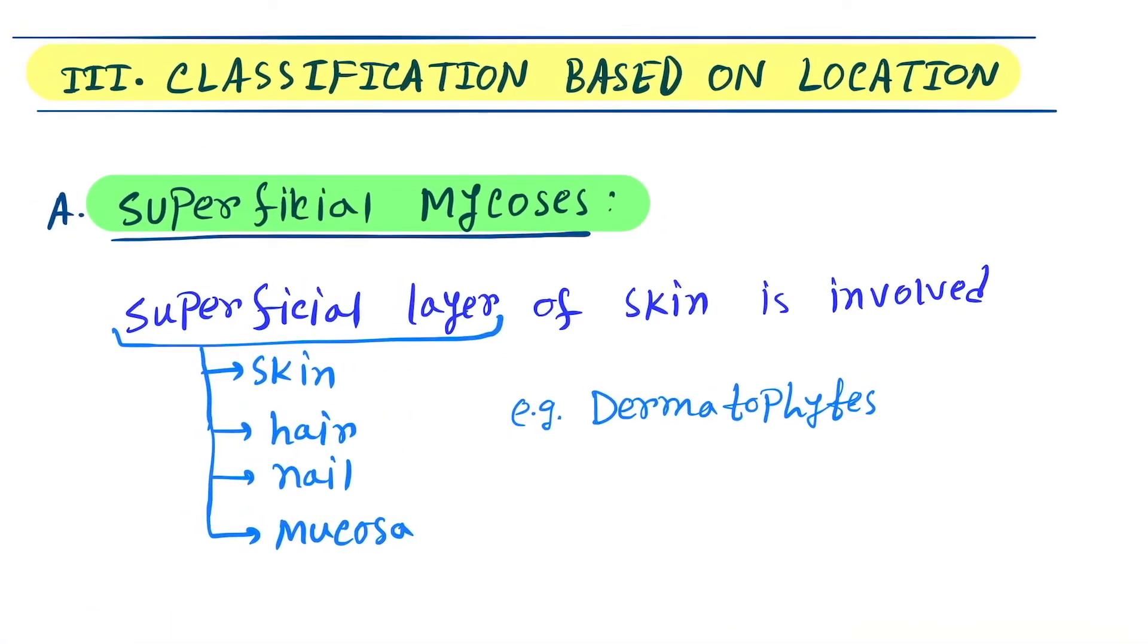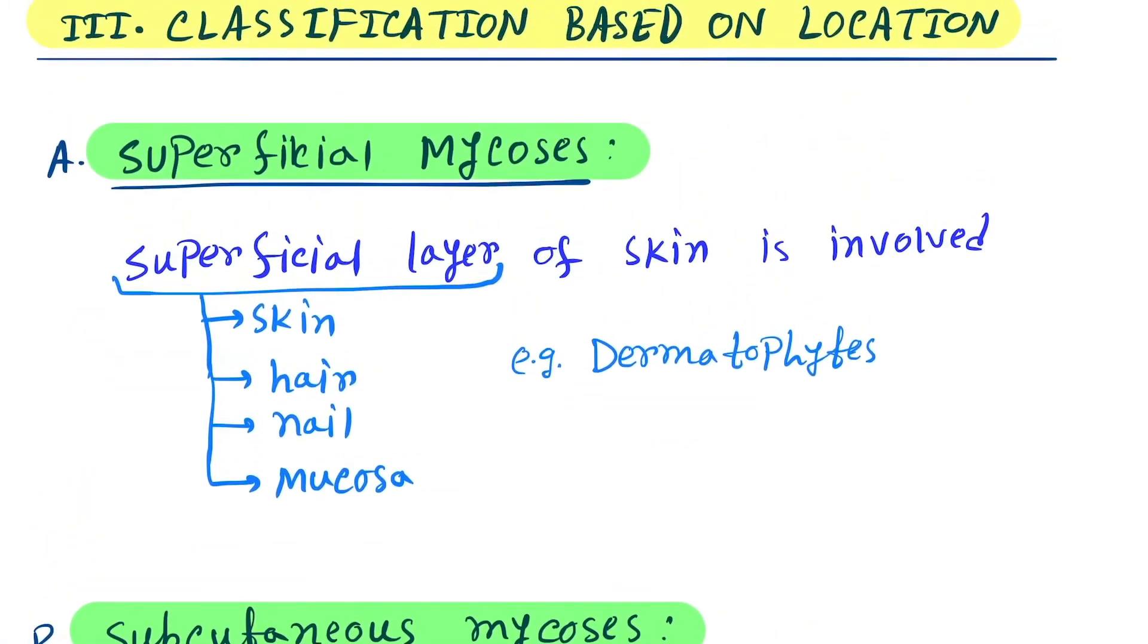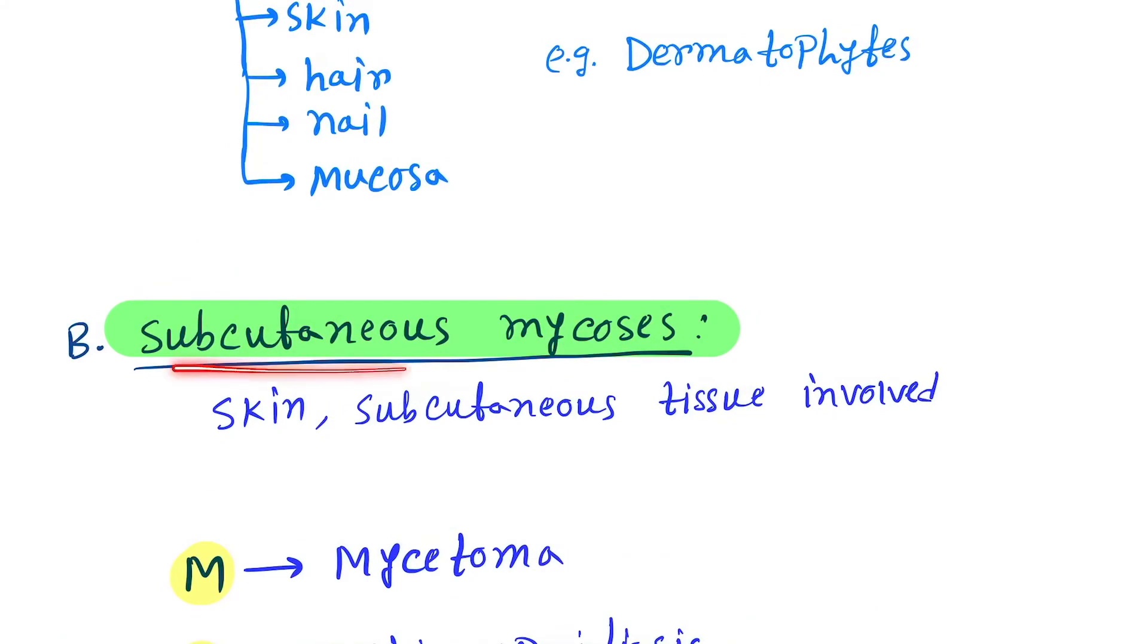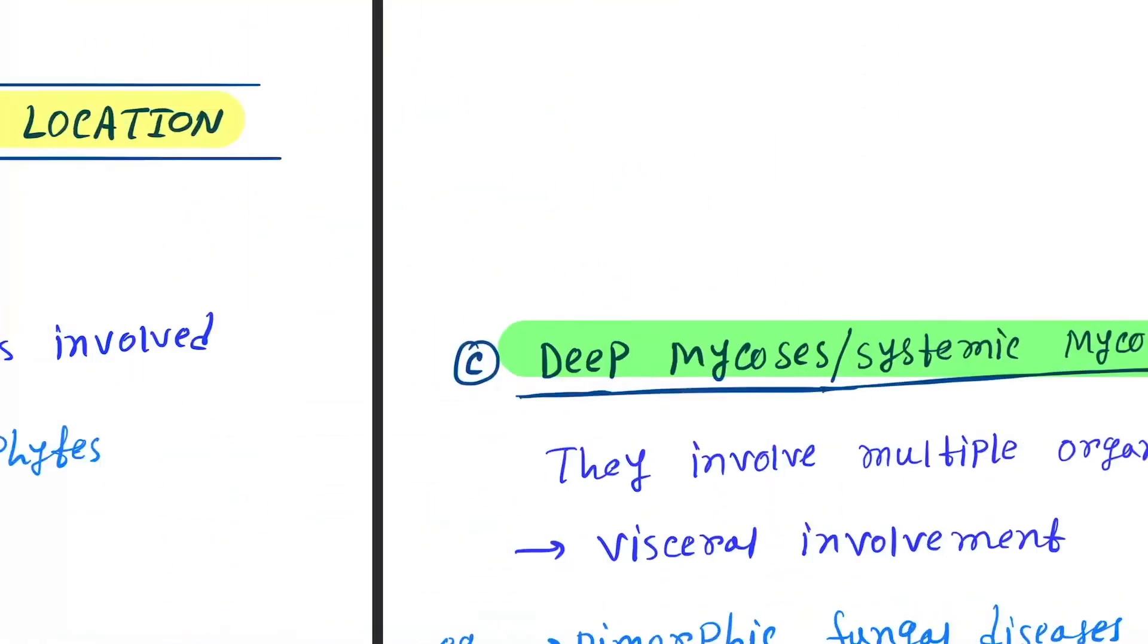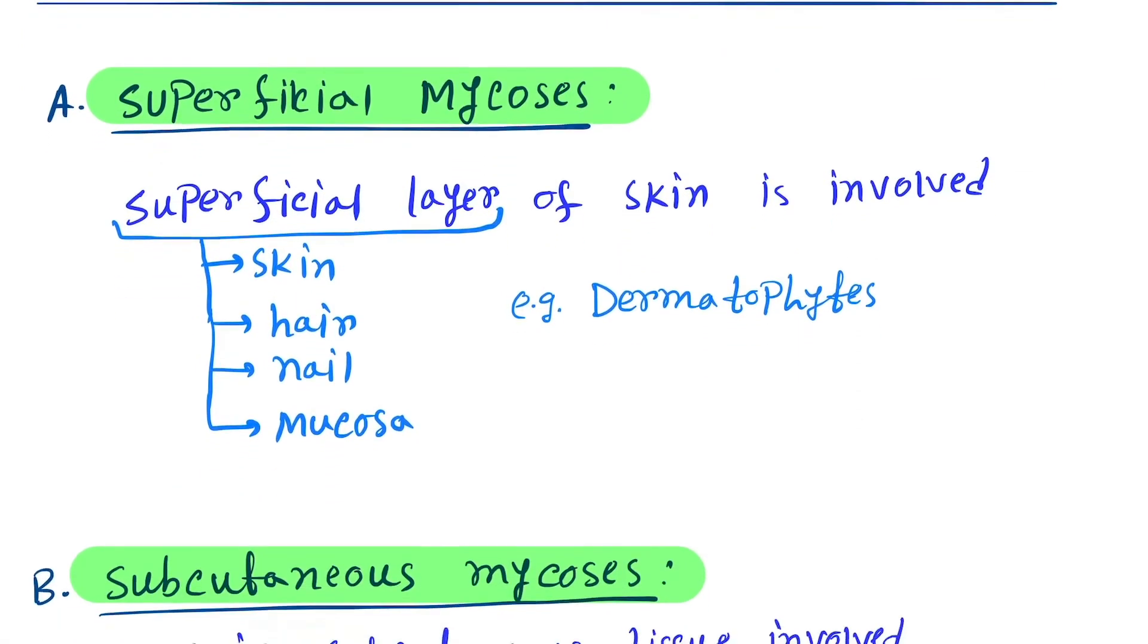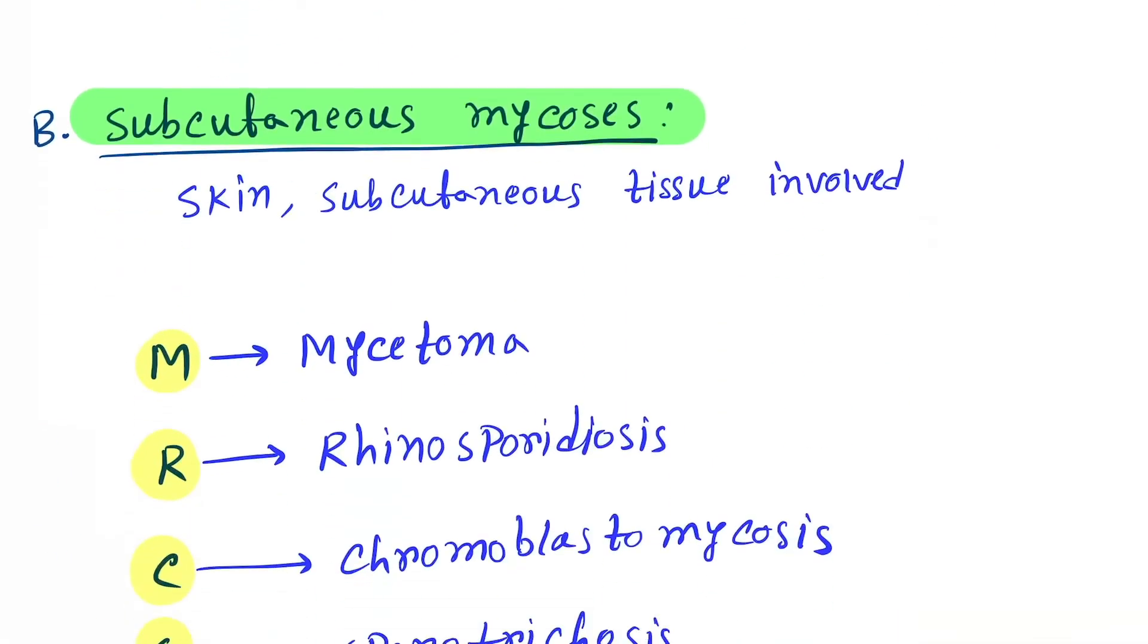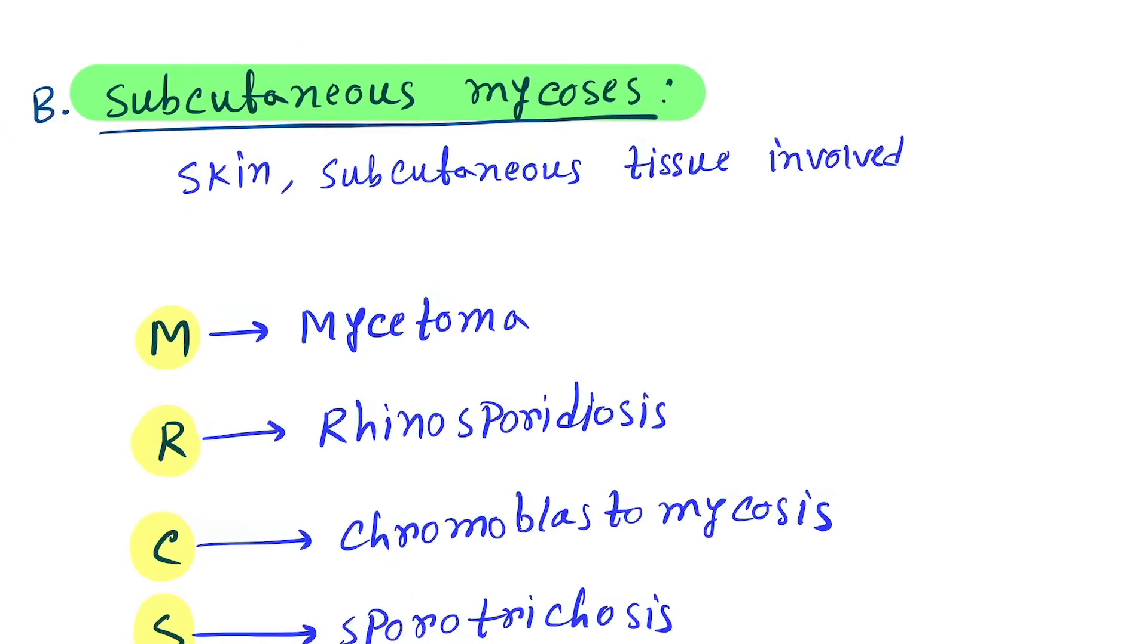Now come to the classification based on location. Here the classification is superficial mycoses, subcutaneous mycoses, and deep mycoses or systemic mycoses. First one is superficial mycoses. As the name implies, this is superficial layer of skin, hair, nail, and mucosa. Example is dermatophyte mycoses.